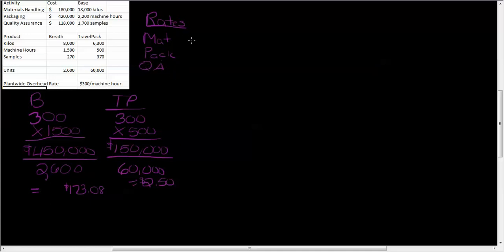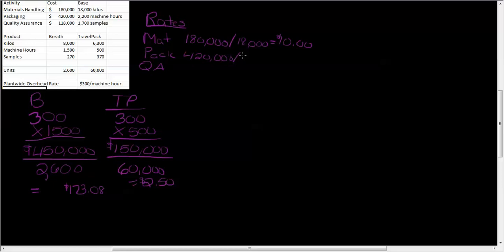To calculate the rates, we take the total cost for each activity and divide it by the base. For material handling: $180,000 divided by 18,000 kilos gives $10 per kilo. For packaging: $420,000 divided by 2,200 machine hours gives $190.91 per machine hour.